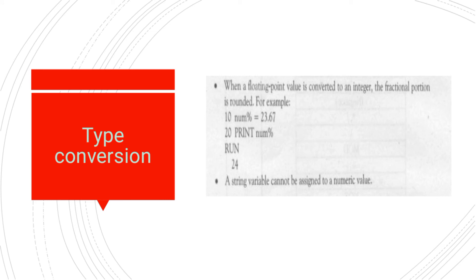Rule four: when a floating point value is converted to an integer, the fractional portion is rounded off. For example: number% = 23.67. We have a floating point value assigned to an integer variable (percent sign). When we print it, 23.67 is rounded off and gives us 24. This means that if we have an integer variable and we store any fractional value in it, when we check the output it will round off the fractional part.